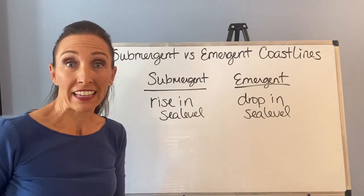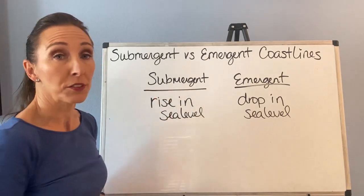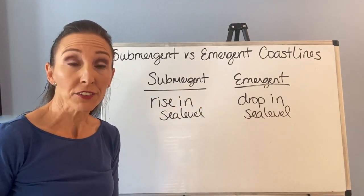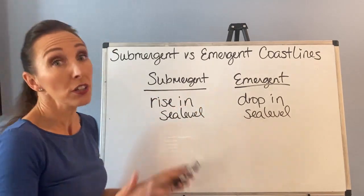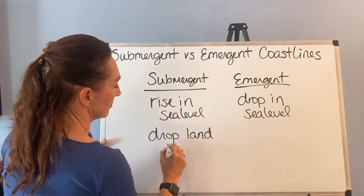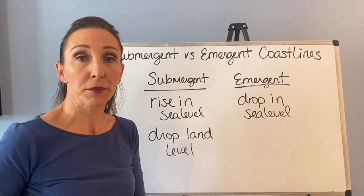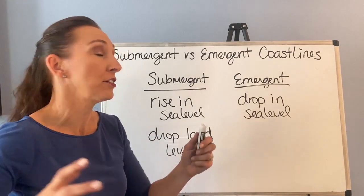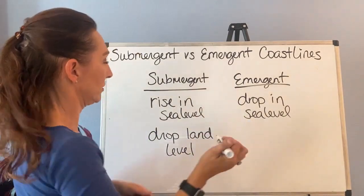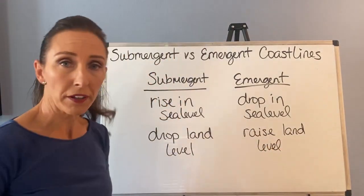Now let's play with land. The other way to accomplish a submergent coastline is to actually just drop that land level, so it would look like the sea level is rising. And conversely, for an emergent coastline, we can just raise that land level up.